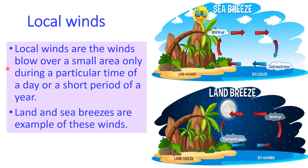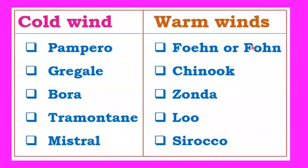Local winds blow over a small area only during a particular time of day or for a short period. Land and sea breezes are examples. There are different types of local winds both cold and warm all over the world: Pampero (Argentina), Bora, Tramontane, Mistral (France), Foehn (Germany), Chinook (Rocky Mountains, North America), Zonda, Loo, and Sirocco. The Loo is a hot dry wind that blows in summer over the northern plains of India. The Sirocco is a Mediterranean wind from northern Africa that can reach hurricane speeds.